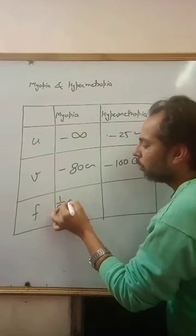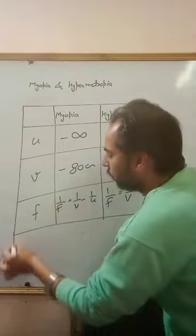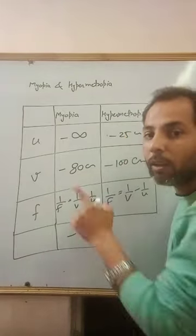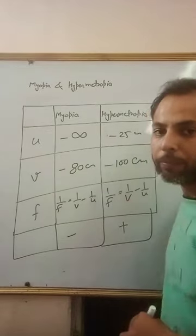How will we calculate the focal length? 1 upon f is equal to 1 upon V minus 1 upon U. Similarly, here it will be 1 upon V minus 1 upon U. Here are the focal lengths. Who will be negative? Negative IDs, we can say, what is the focal length? Who will be positive? This is the focal length. See you.